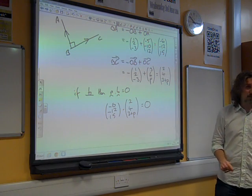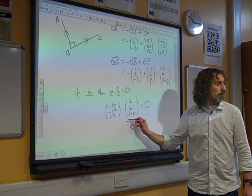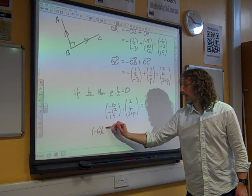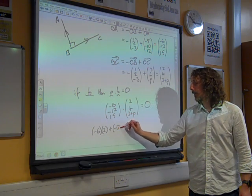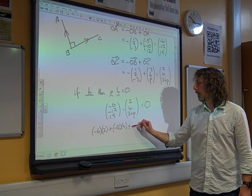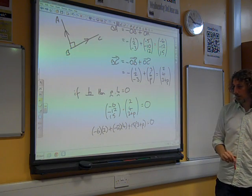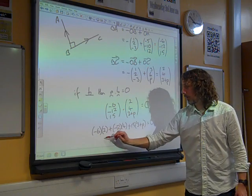So that dot product is equal to 0. So in the case of what we're doing here, if these are perpendicular, their scalar product is supposed to be equal to 0. And the way that we calculate the scalar product is we multiply the components and add things together. So that's minus 6 times 2, plus negative 12 times 4, plus 15 times 3 plus P.